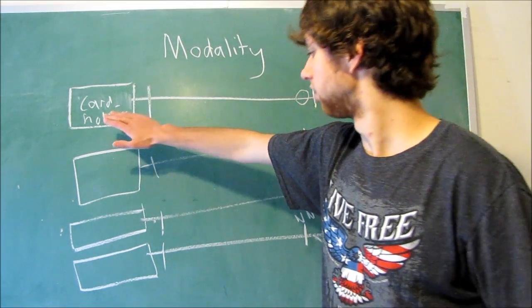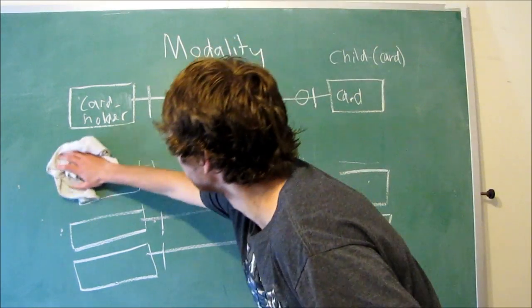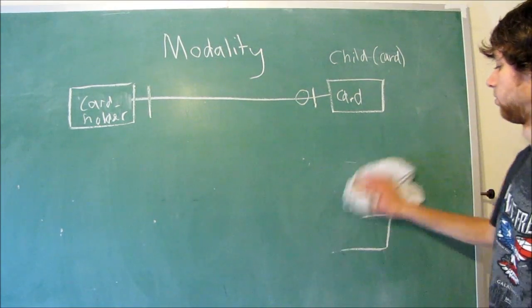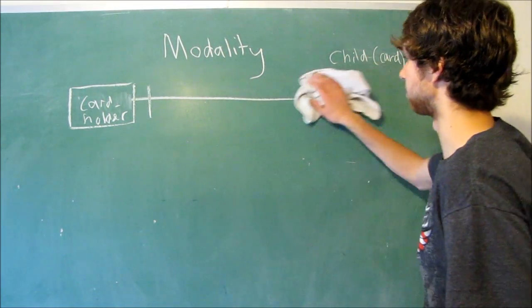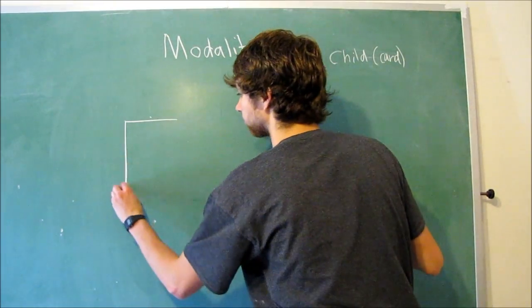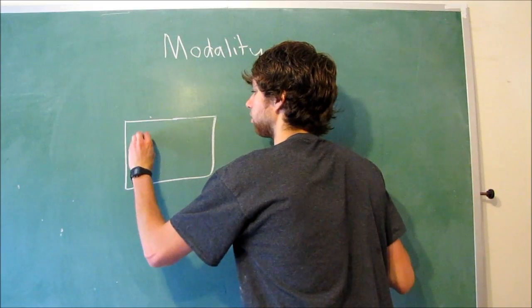So in this example, let's just focus on the top one just to make it easier. We would draw this within our database application. We would say we have the table card holder, and then that has some kind of relationship with the table card.